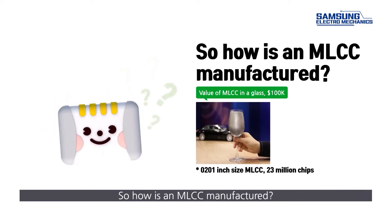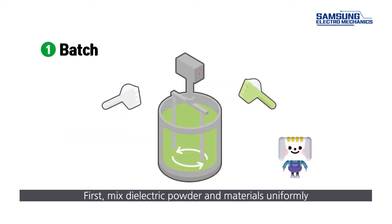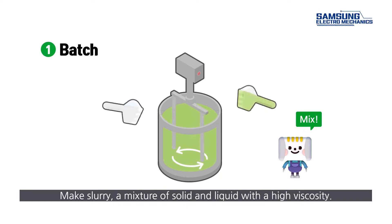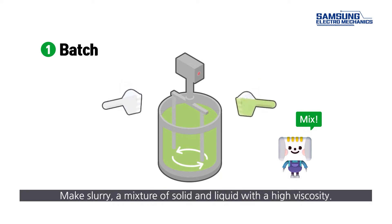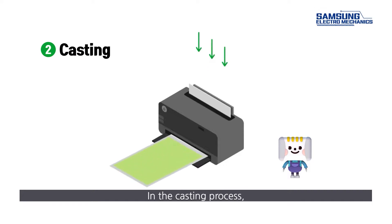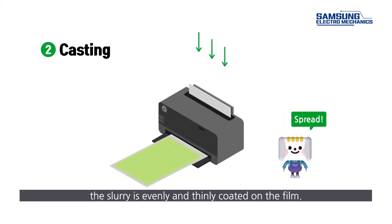So, how is an MLCC manufactured? Stage one: batch. First, mix dielectric powder and materials uniformly to make a slurry — a mixture of solid and liquid with high viscosity. Stage two: casting. In the casting process, the slurry is evenly and thinly coated on the film.